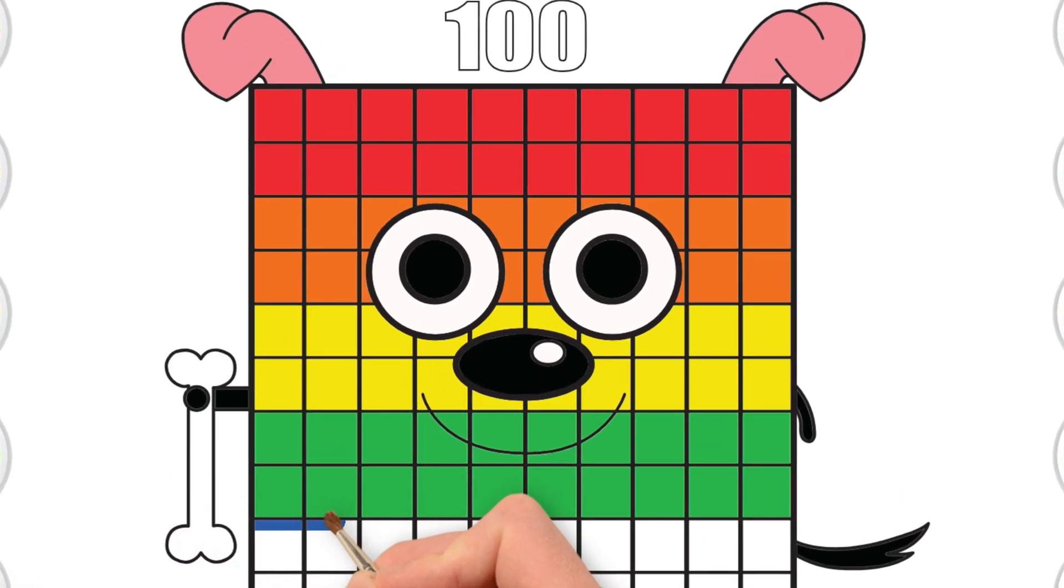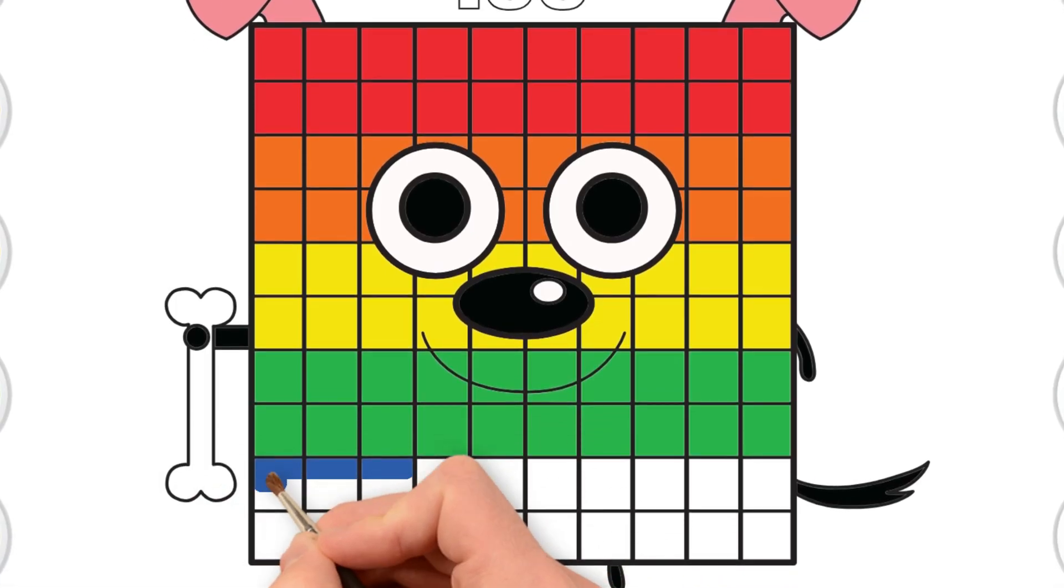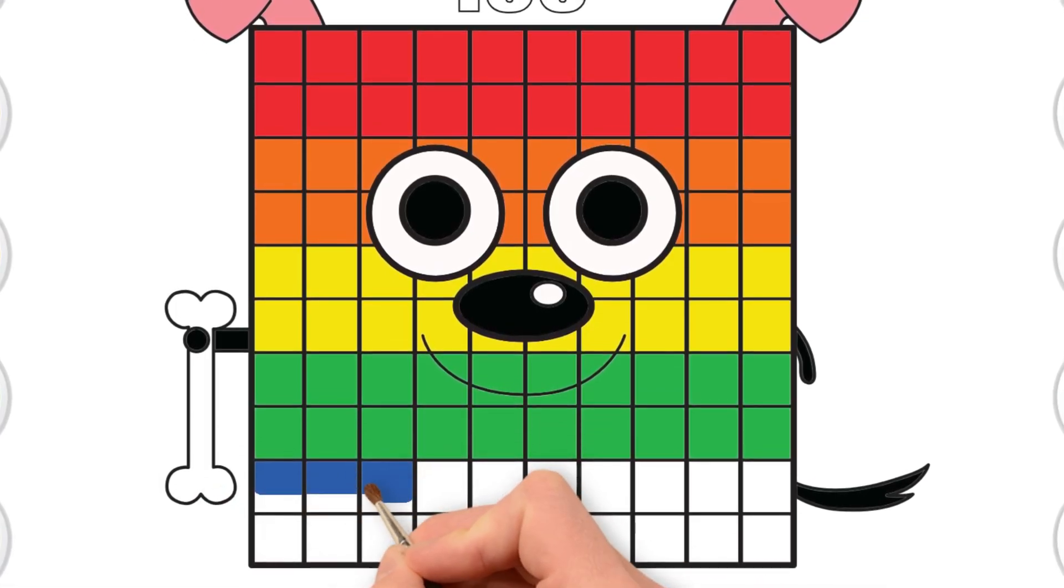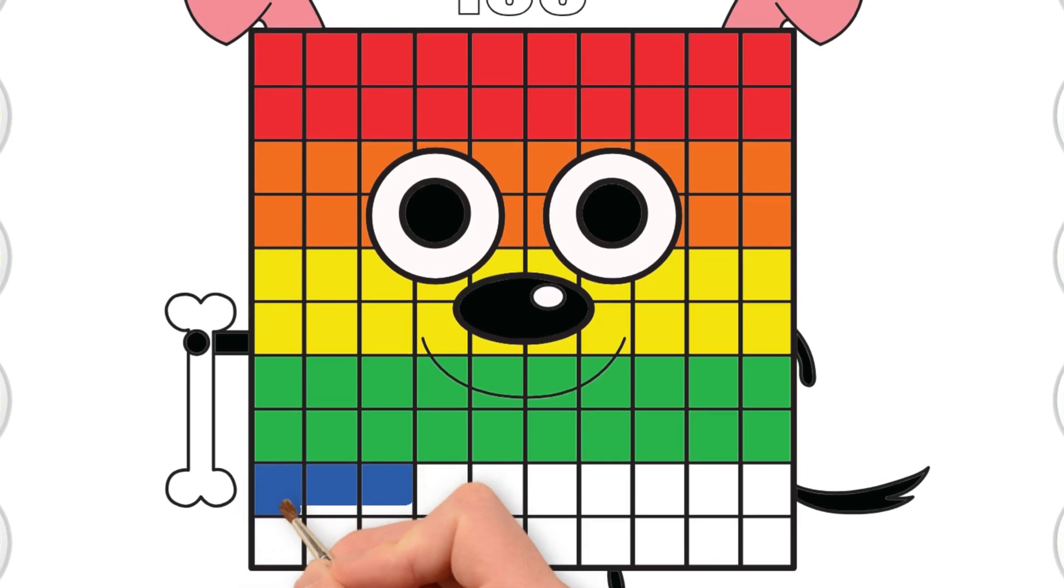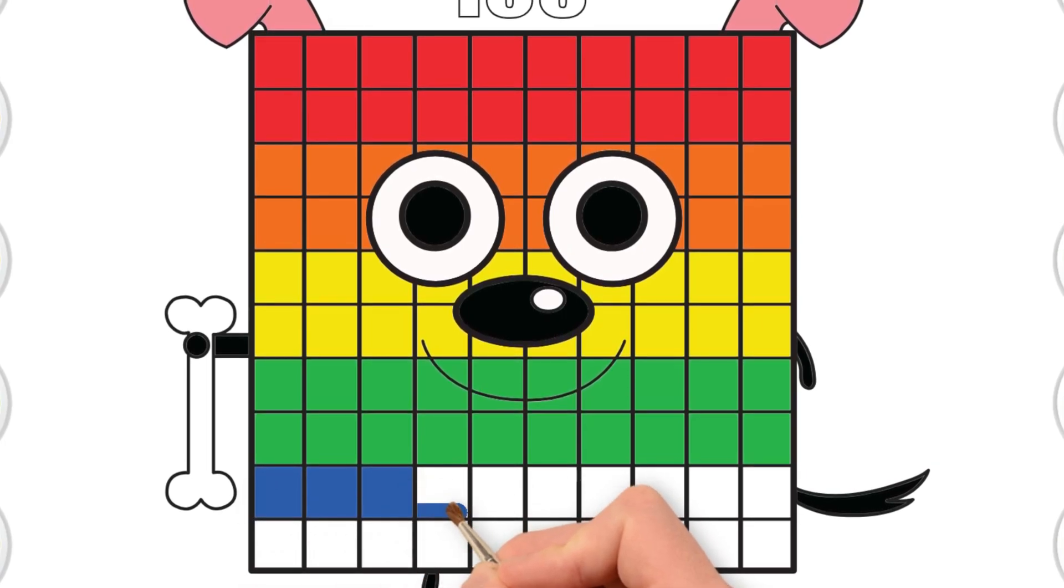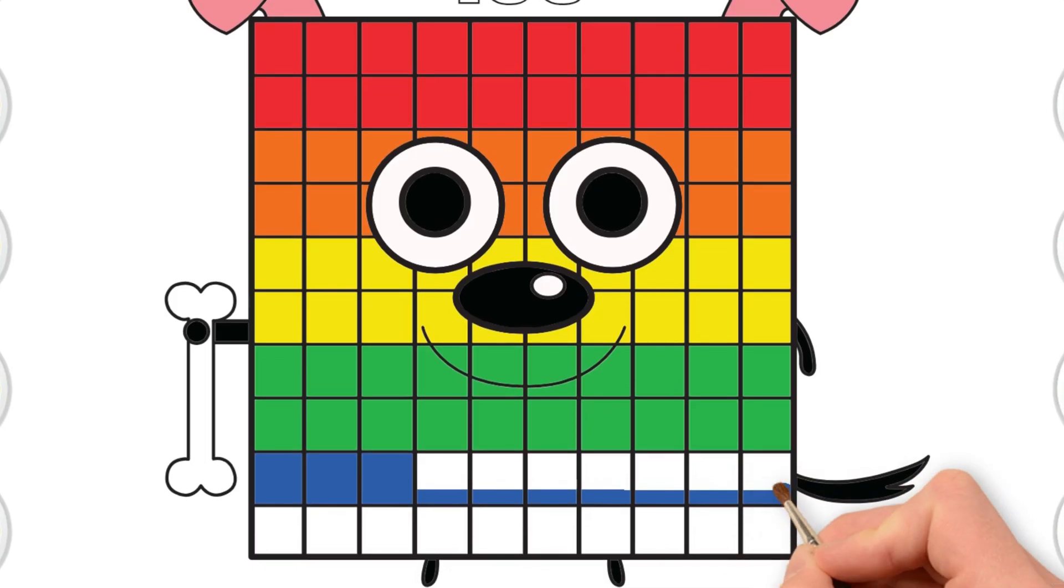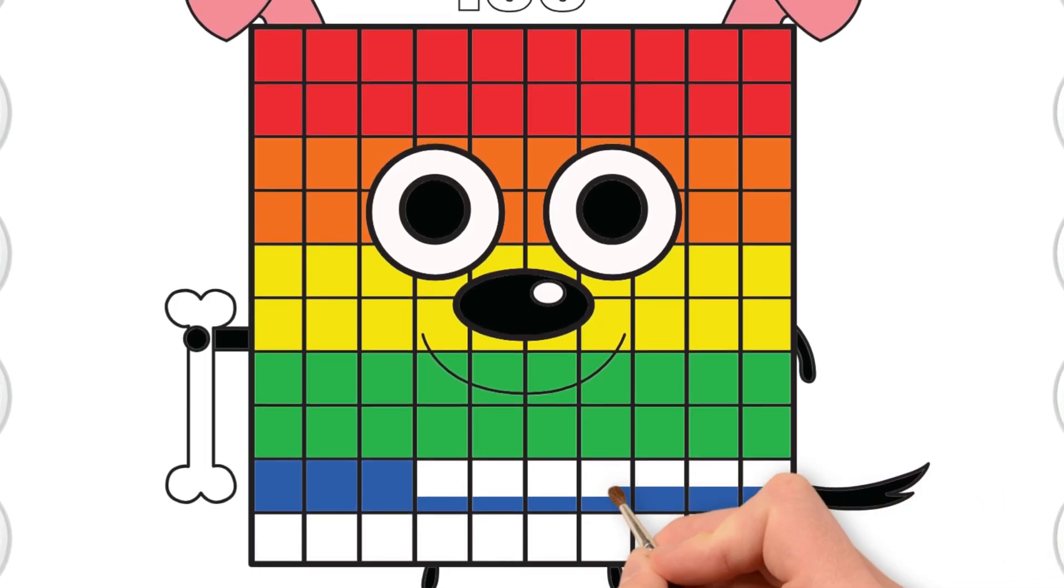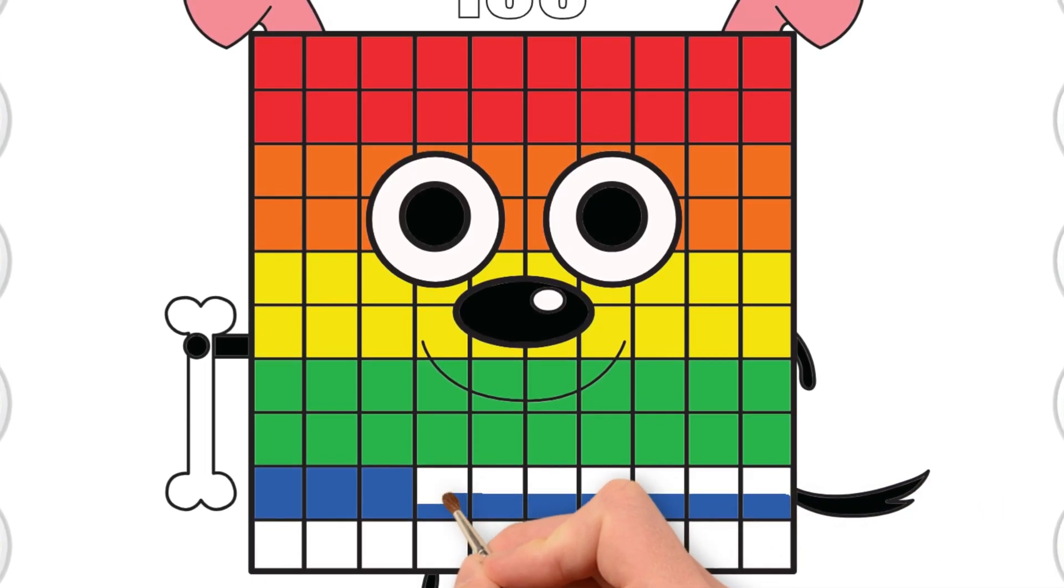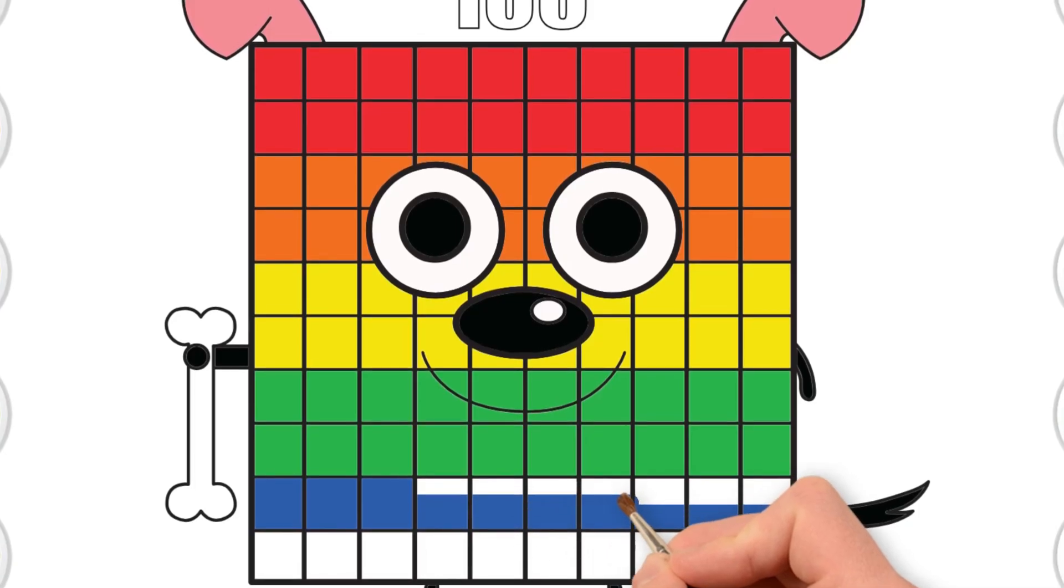Color row nine with blue squares. Can you take a big breath and say blue in one long voice while I count to five? Ready? One, two, three, four, five, six, seven. Go. Blue.